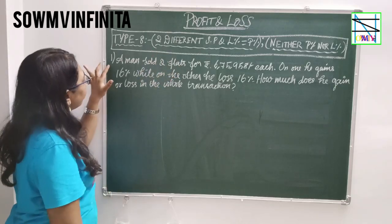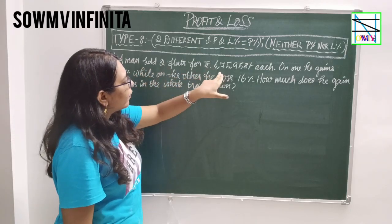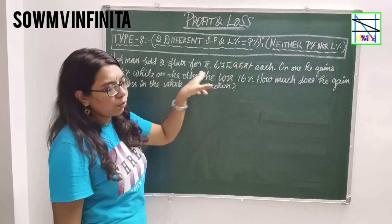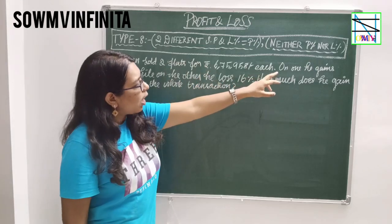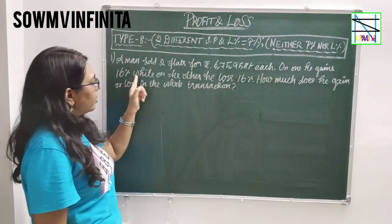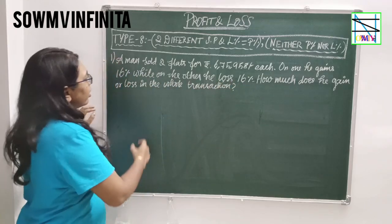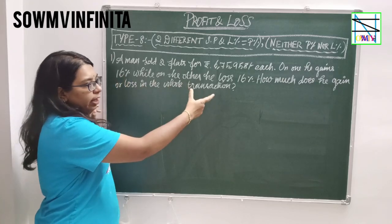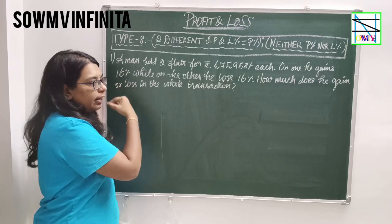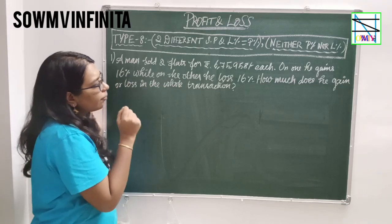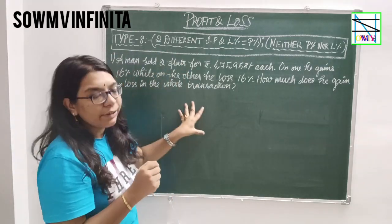The first problem: Amin sold two flats for 6,75,958 rupees each. On one he gained 16% and on the other he lost 16%. Here, the given loss percent value is equal to the profit percent value — 16% gain and 16% loss. How much does he gain or lose in the whole transaction?